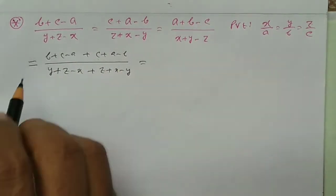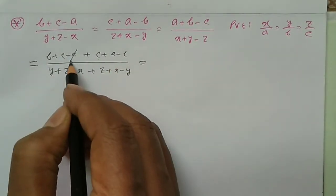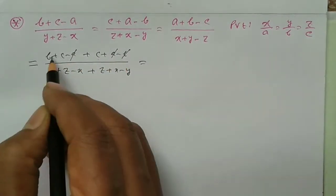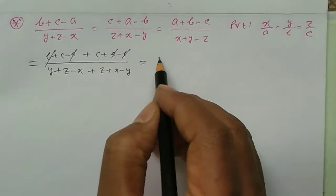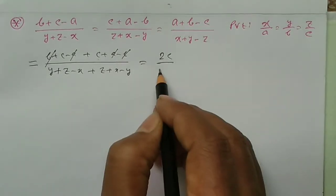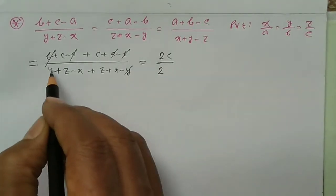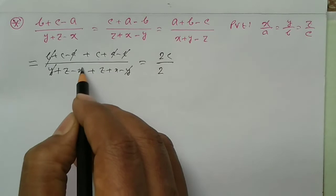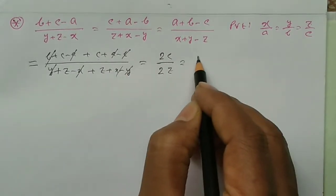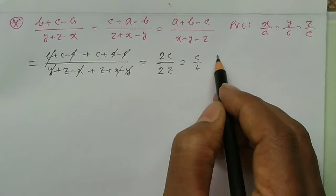We look at the numerators: B plus C minus A, plus C plus A minus B, plus A plus B minus C. This gives us 2C by Z.